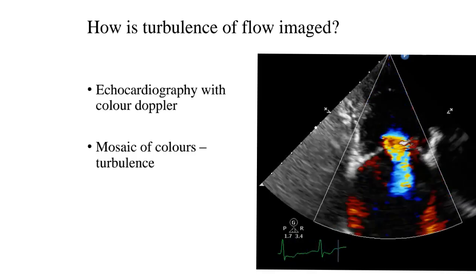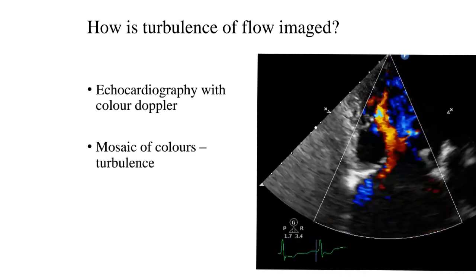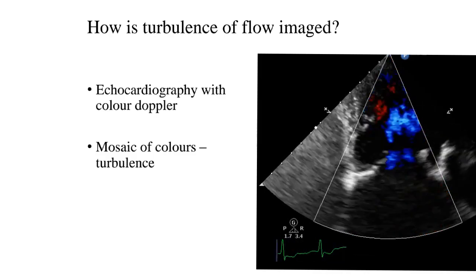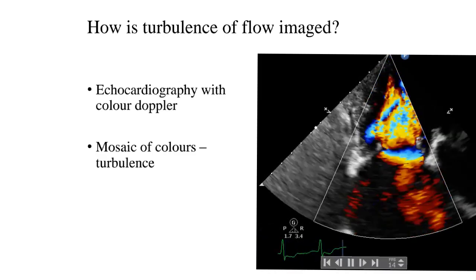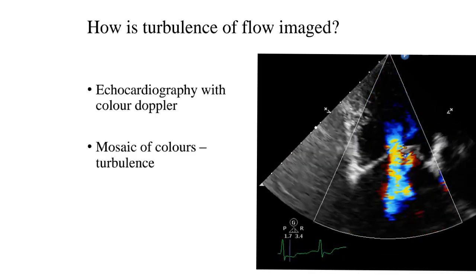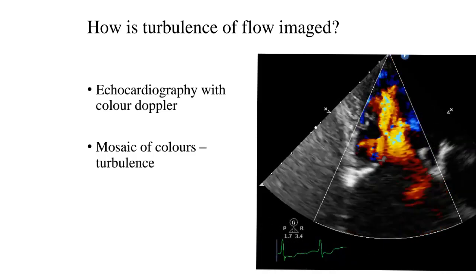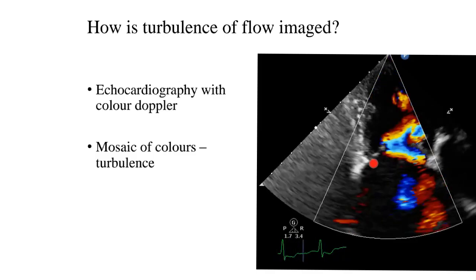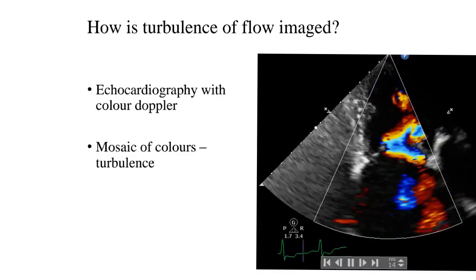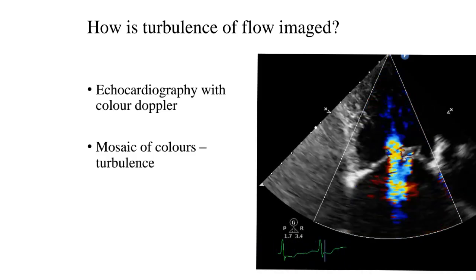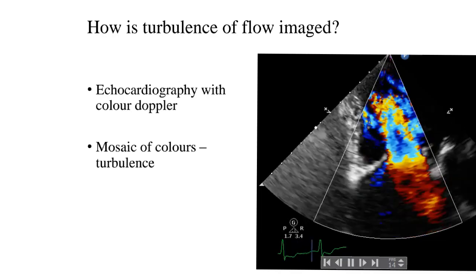For example, here is an example of a tricuspid valve — this is the right atrium, this is the right ventricle. Normally the blood should flow downstream from the right atrium to the right ventricle. However, this tricuspid valve is diseased, it is a bit thickened, and it is causing a significant amount of regurgitation back into the right atrium. When the valve is regurgitating, there is a lot of mixture of velocities — blues and yellows and oranges — which essentially points to a mosaicism of colors indicating turbulence of blood flow.